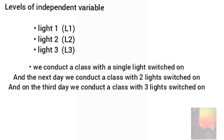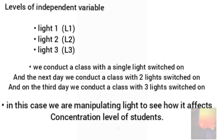On the first level of the IV, we are conducting a class with one light switched on. On the second level, the class is being conducted with two lights switched on. On the third level, the class is being conducted with three lights switched on. In this case, we are manipulating our one variable which is light, and that is our independent variable. We are doing this to see how this affects our dependent variable, which is the concentration level of students.